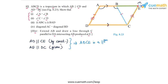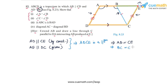Since ADCE is a parallelogram, AD is equal to CE. But we are also given that AD is equal to BC. Because AD equals BC and AD equals CE, we can conclude that BC and CE are equal. So this side BC and this side CE are equal.